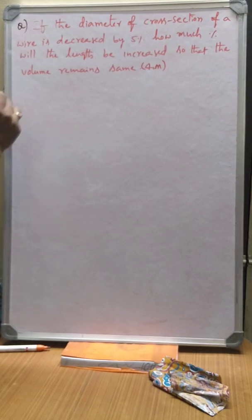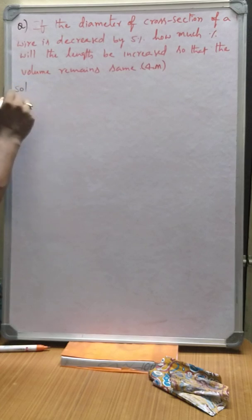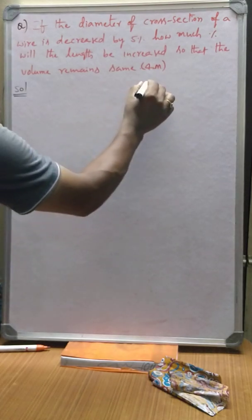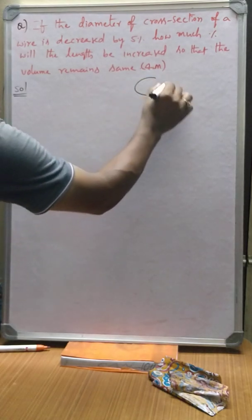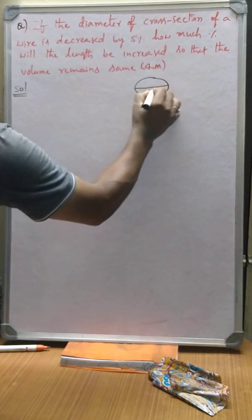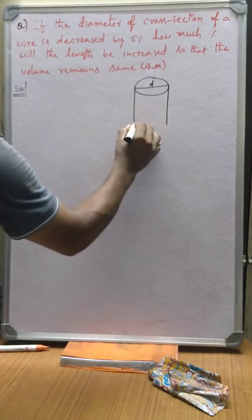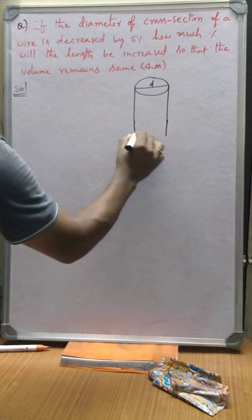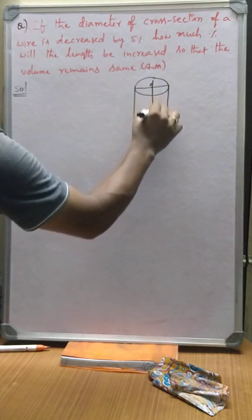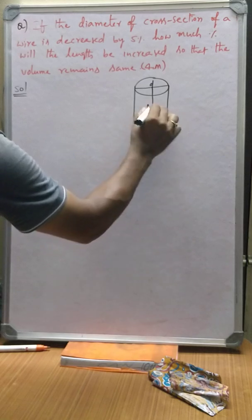Let us go for the solution. Here let me draw some figures to understand the problem. Here we have taken a wire with diameter, let it be some D, and which is of height or length.